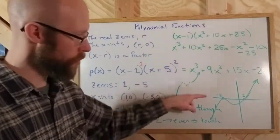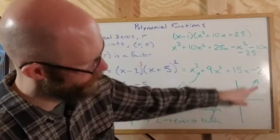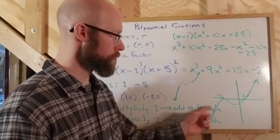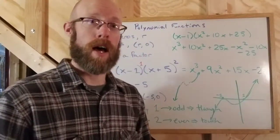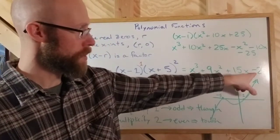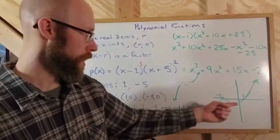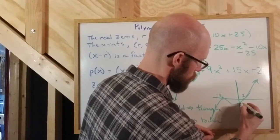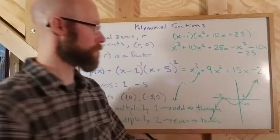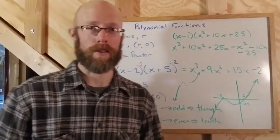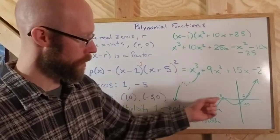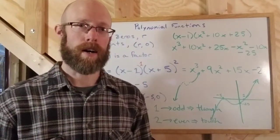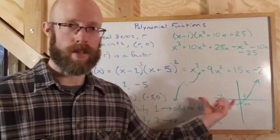The graph should look something like that — you can always verify this on your calculator if you're not sure. I don't know exactly how far down it goes or how steep it is, but I at least know the general characteristics. I can also find that the y-intercept is at negative 25. The y-axis scale ends up quite a bit different from the x-axis scale in this case.